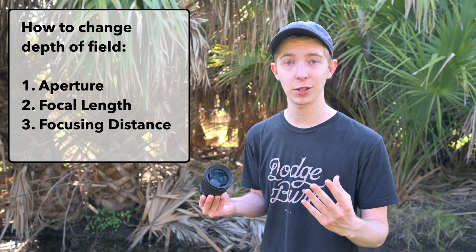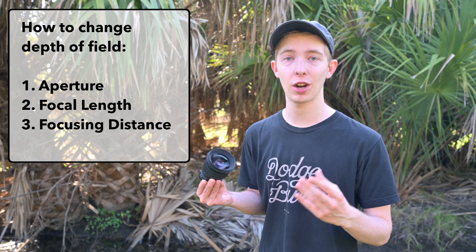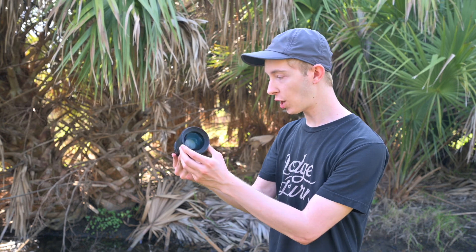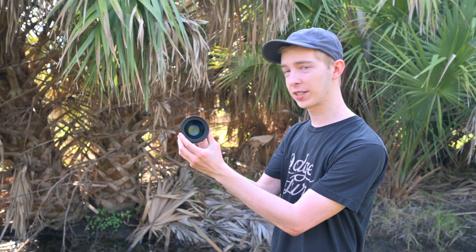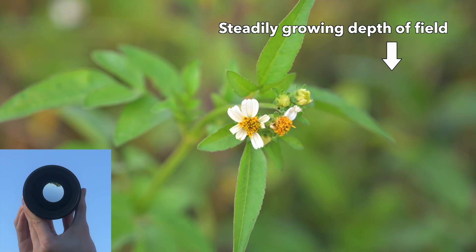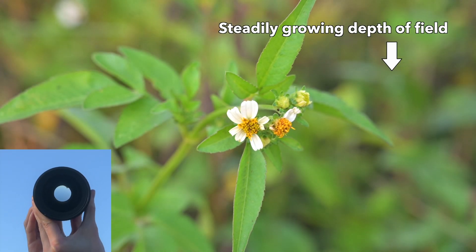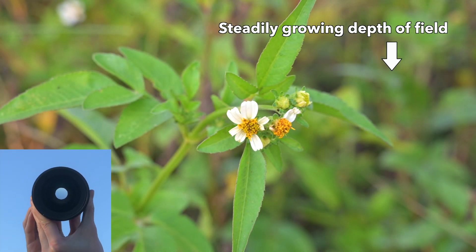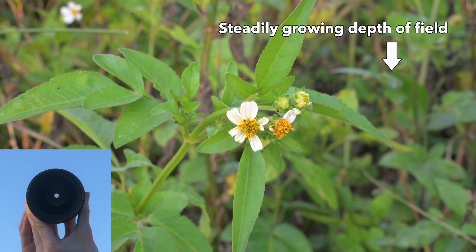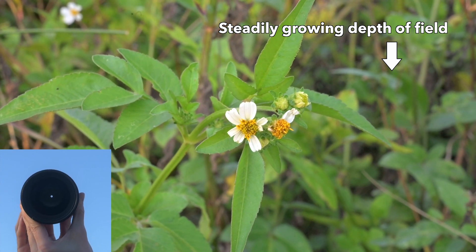It's easier to explain by demonstrating, so let's start with aperture. Aperture is the opening in your lens that can change size. When the opening is wide, it gives you a shallower depth of field, and when the opening is narrow, it results in a lot more depth of field. That's a pretty dramatic change.